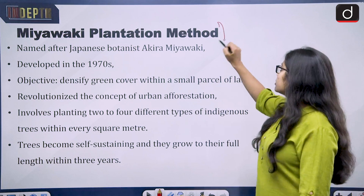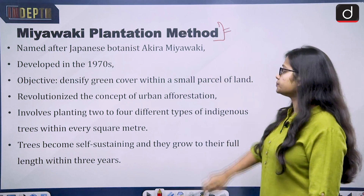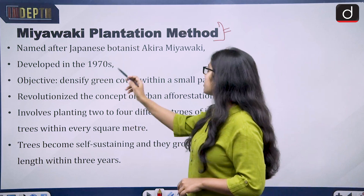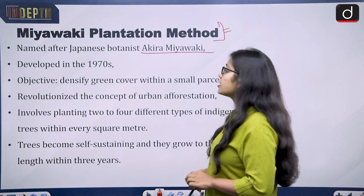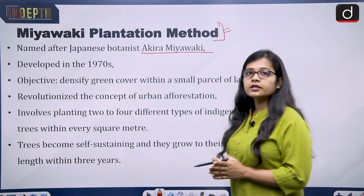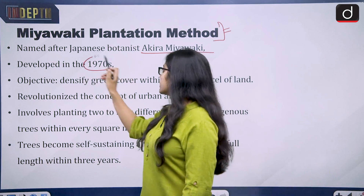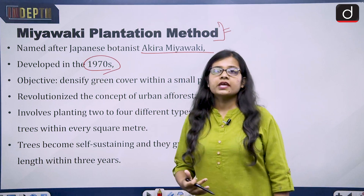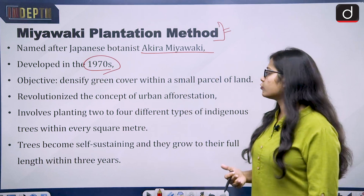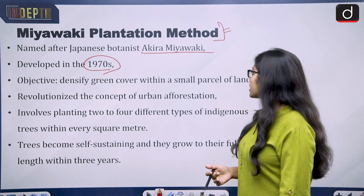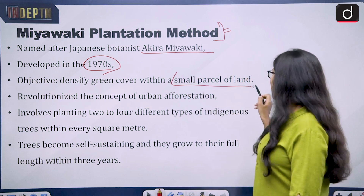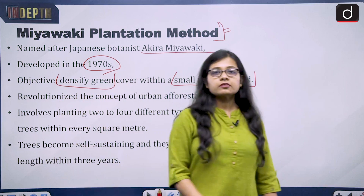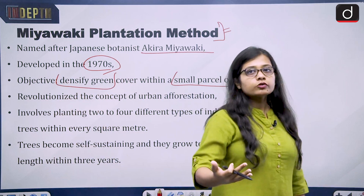The Miyawaki plantation method has been named after Japanese botanist Akira Miyawaki. This method was developed in the 1970s, and its main objective was to densify green cover within a small parcel of land.